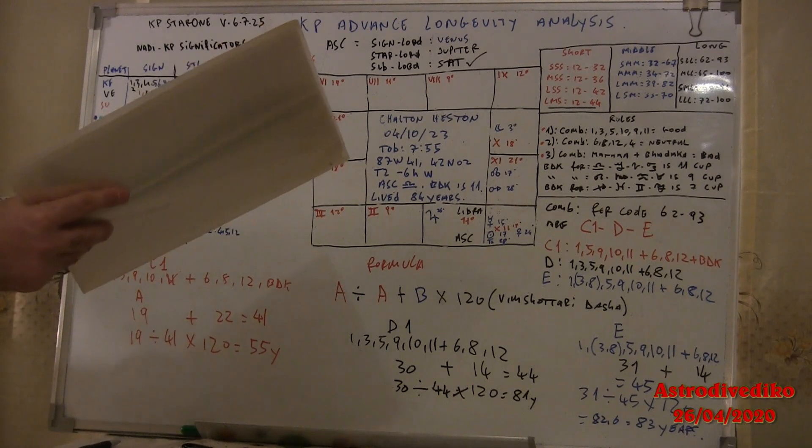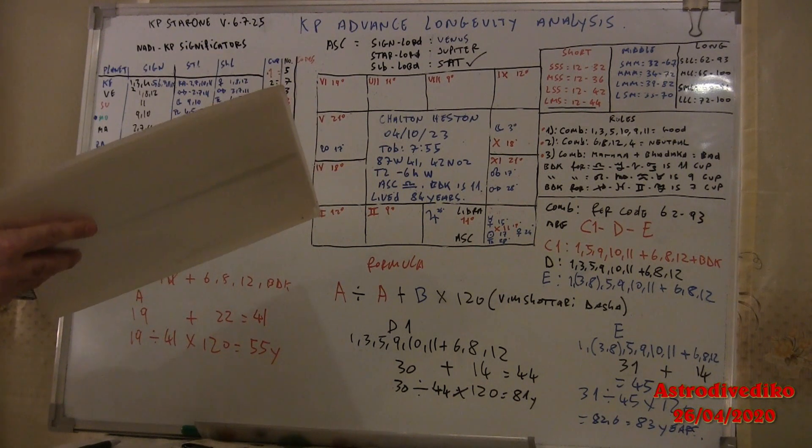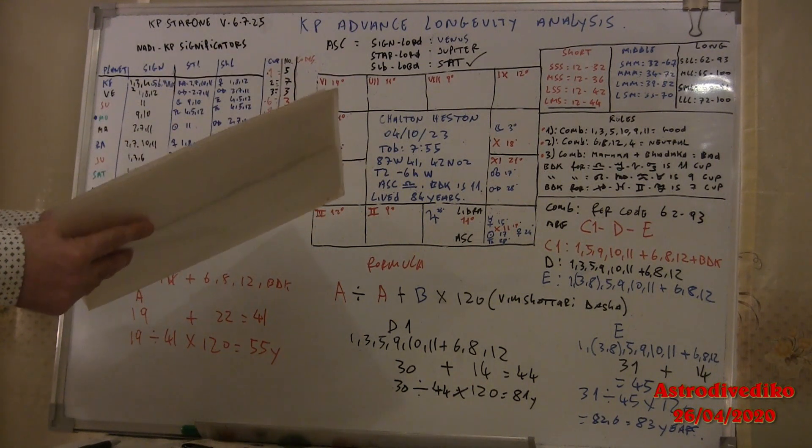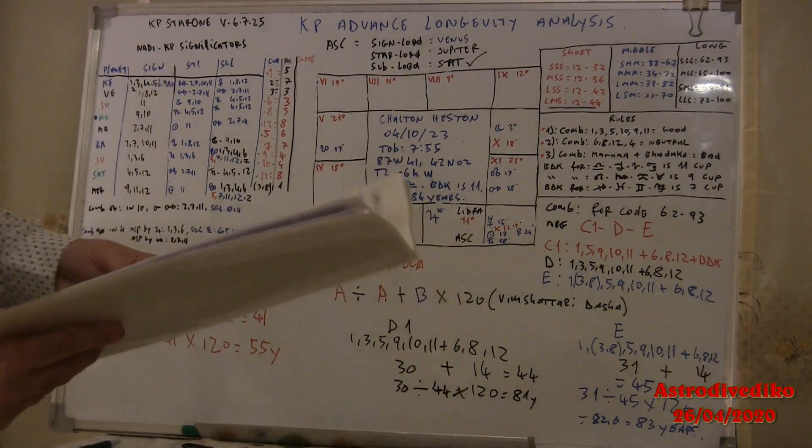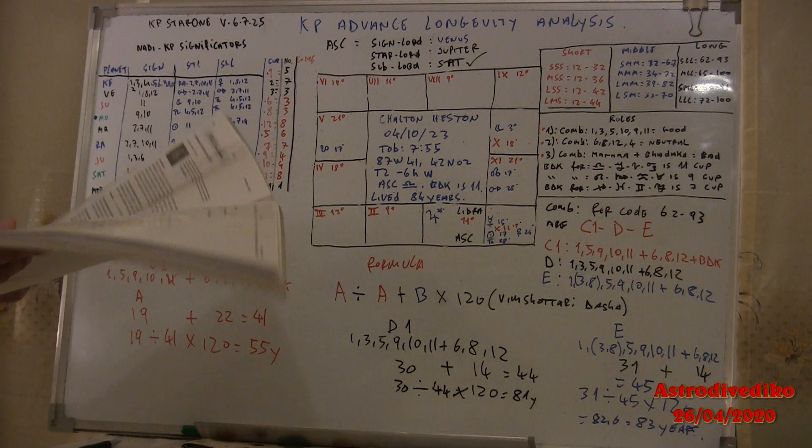The next strongest is combination houses 1, 3, 5, 9, 10, 11, and the last strongest is 1, 3, 8 together, 5, 9, 10, 11. This is for the good houses, good houses for longevity.